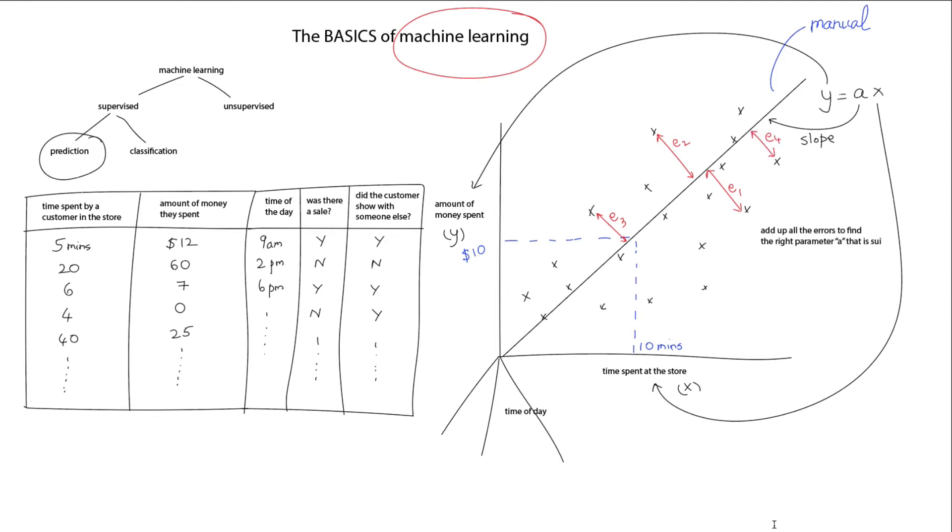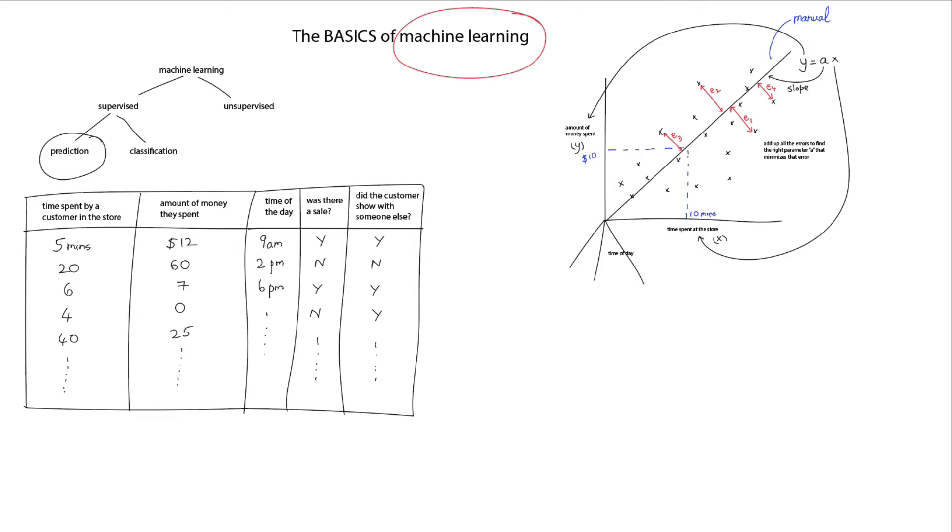If we are to plot the sum of those errors against the parameter a, then we'll get a curve like this. This is often called the cost function. In the above example, maybe we picked a point a1 and that has an error of e1. We could be doing better.